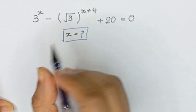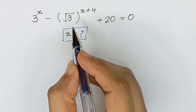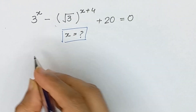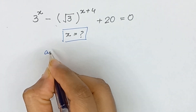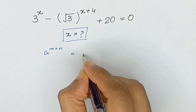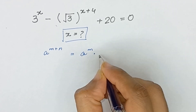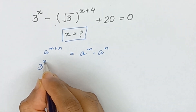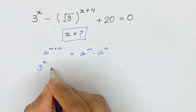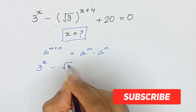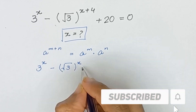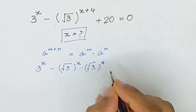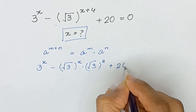Here we have the second term: square root of 3 to the power x plus 4. As we know that a to the power m plus n is equal to a to the power m times a to the power n, so our equation will become 3 to the power x minus square root of 3 to the power x times square root of 3 to the power 4 plus 20 is equal to 0.